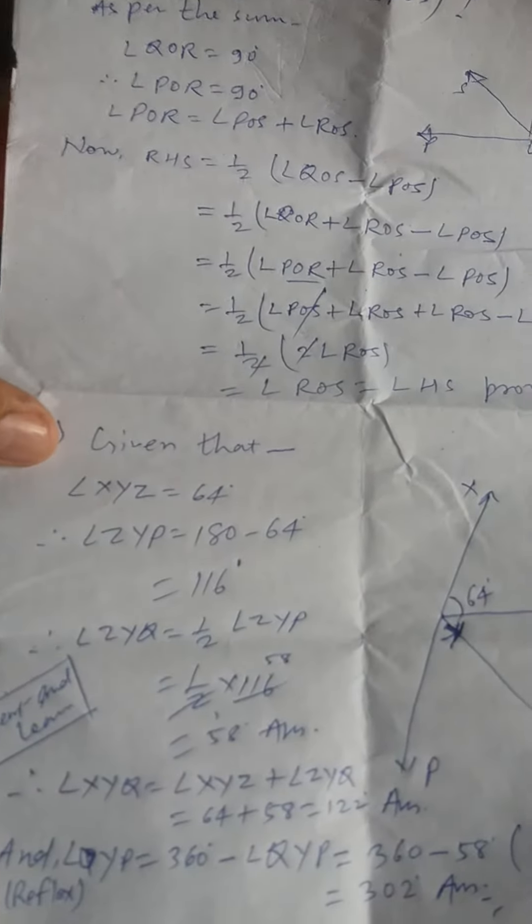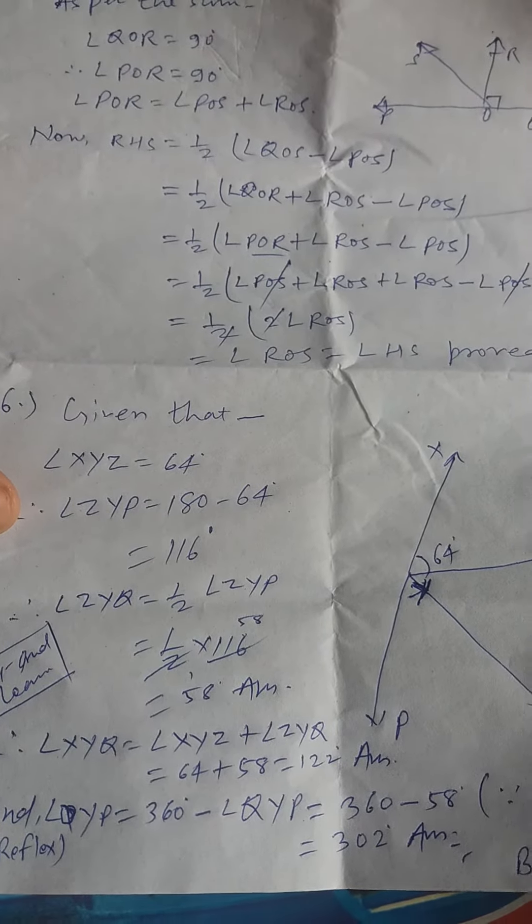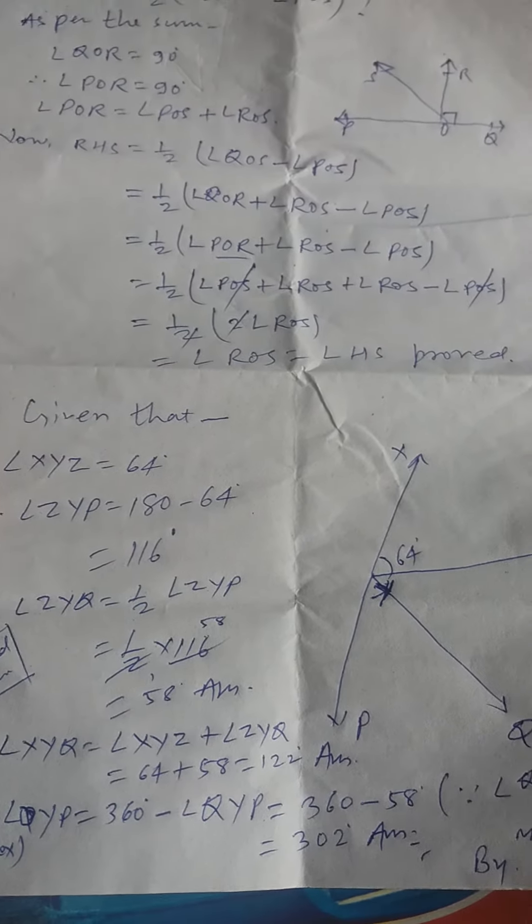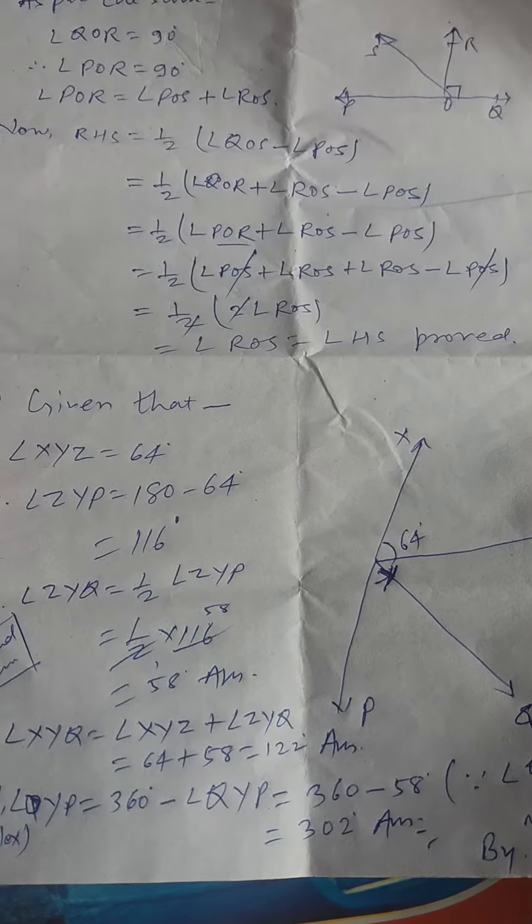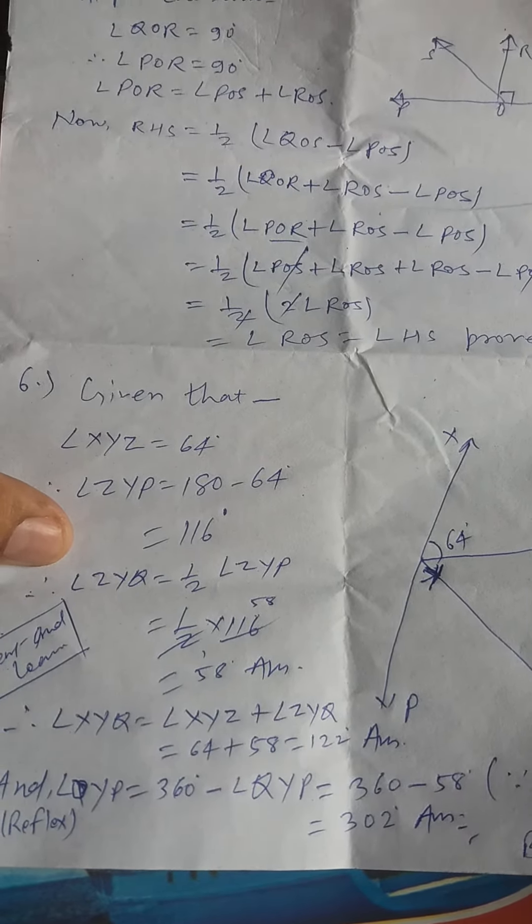Next, given that angle XYZ equals 64 degrees, angle ZYE equals 180 minus 64 degrees, which is 116 degrees.